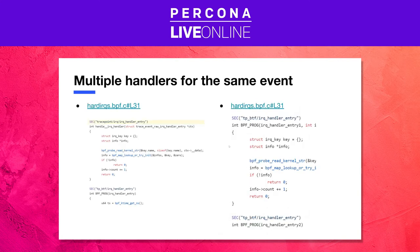Starting in version 0.2, libbpf supports multiple entry-point BPF programs within the same ELF section. Therefore, you can attach multiple BPF programs to the same event, such as trace points or kprobes, without worrying about the ELF section name clashes. You can now naturally define multiple handlers for an event. Before that, you needed to define two different event types for the same event.